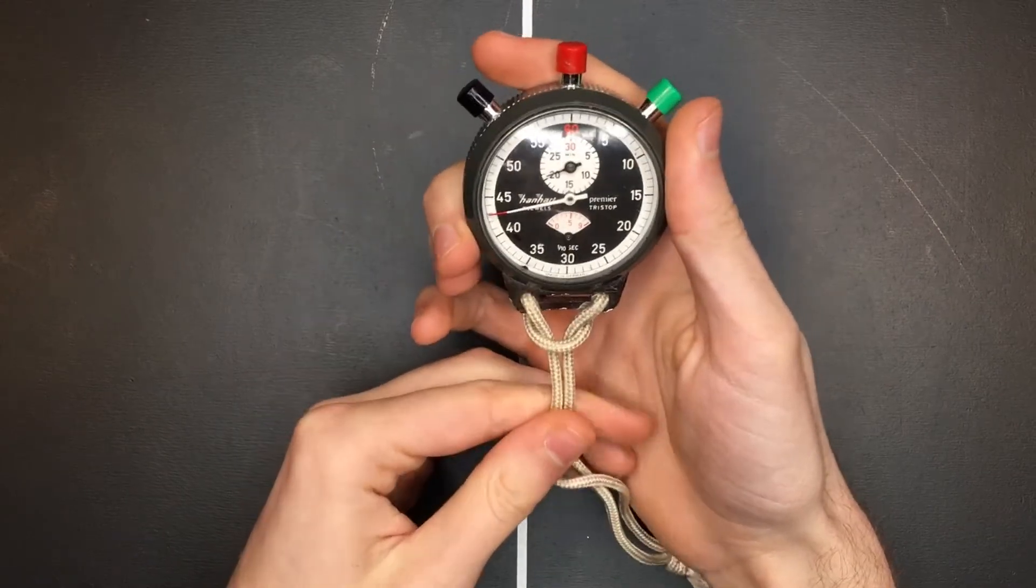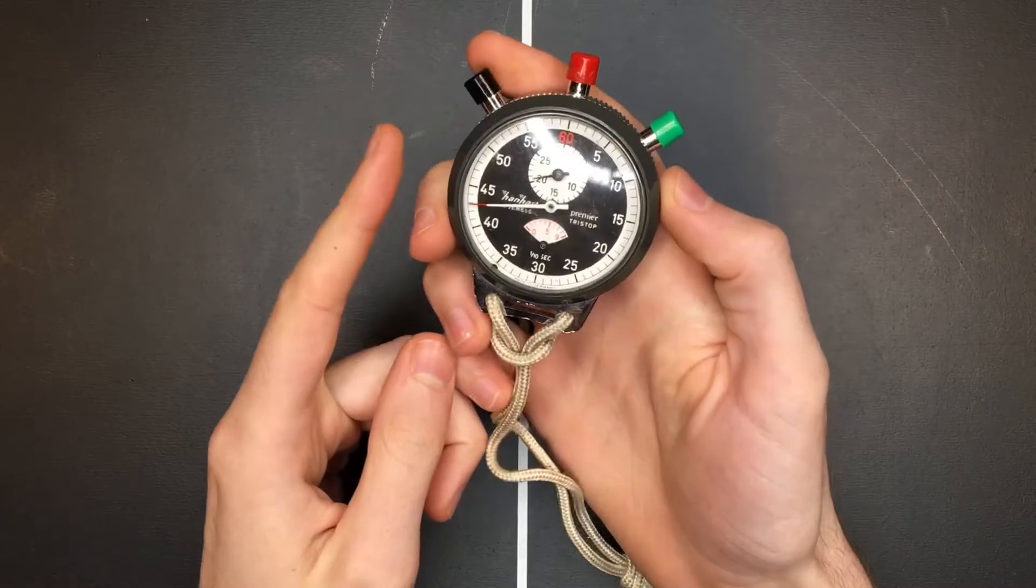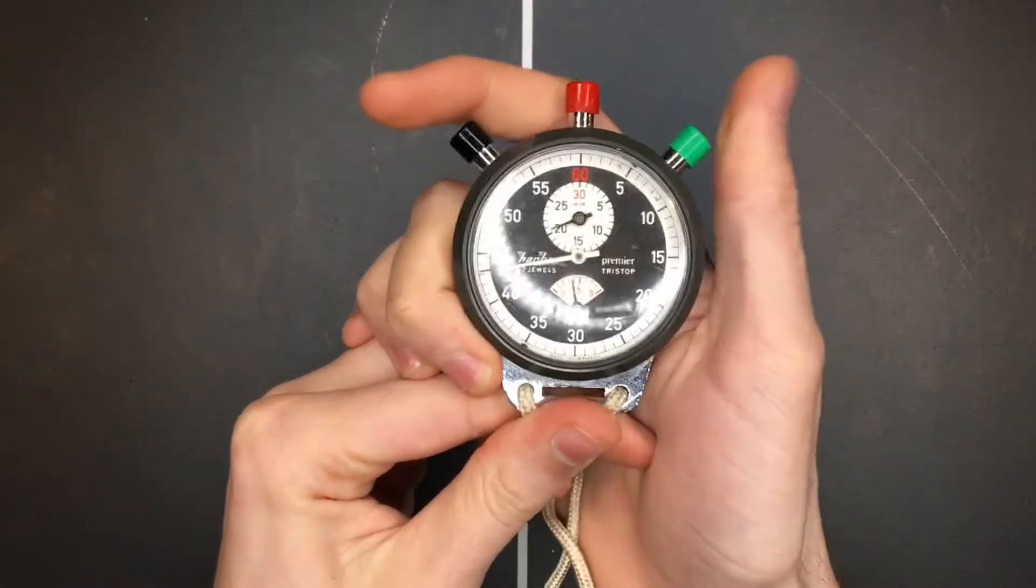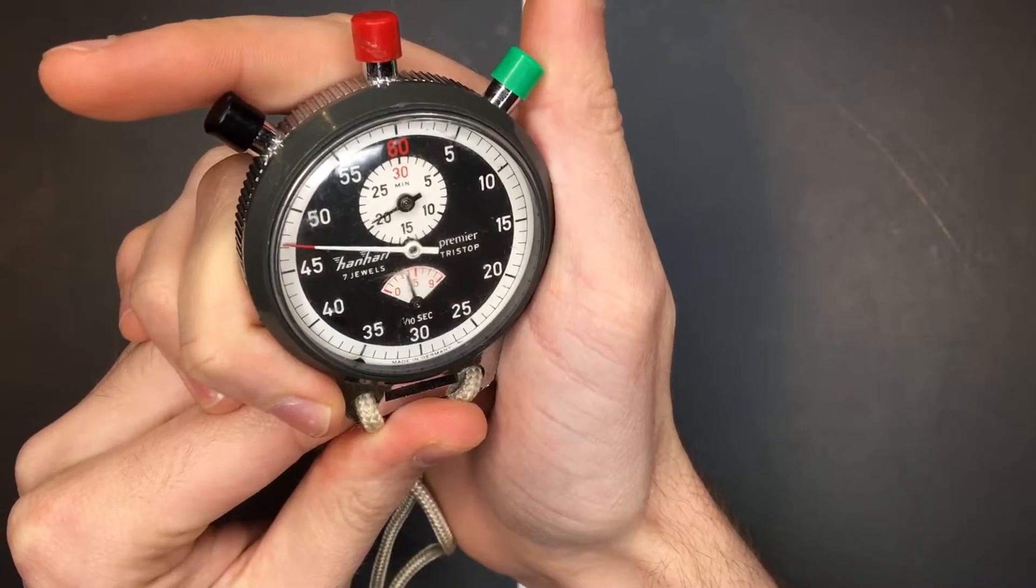I've had this for about a decade, and in that time, this black button has never done what it's supposed to. The green button, if I click that, it'll start keeping time accurately, as this stopwatch should.